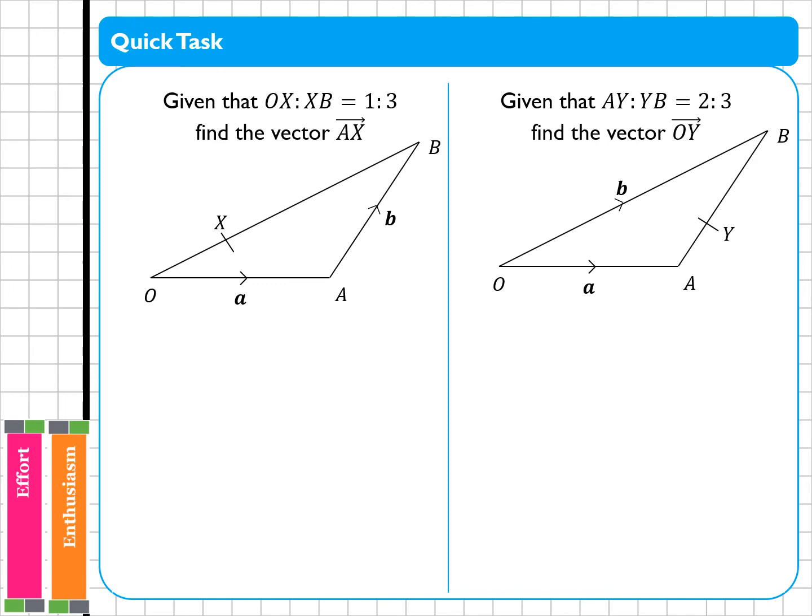So working this through in exactly the same way, I'm first going to draw on my information. I've got a quarter here and 3 quarters here. I want to go from A and then up to X, which means I've got minus A plus a quarter of O to B, which means I've got minus A plus a quarter of A plus B, which means I've got minus A plus a quarter of A plus a quarter of B, which means I have minus 3 quarters A plus a quarter of B. Again, I can factor out that quarter if I want and have that as minus 3A plus B.